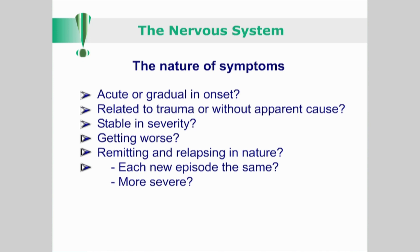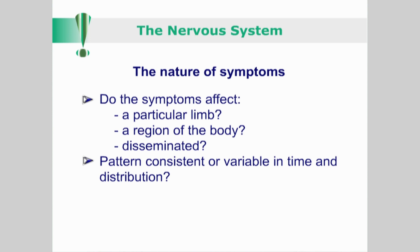Are the symptoms stable in severity or getting worse? Are they of a remitting and relapsing nature? And if so, is each new episode the same or more severe? Do the symptoms affect a particular limb or region of the body, or are they disseminated? And is this pattern consistent or variable in time and distribution?